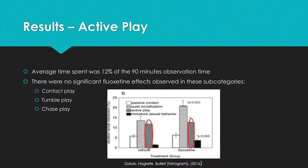The average time spent in active play was 12% of the 90 minutes observed, and there were no significant changes from vehicle to fluoxetine-treated monkeys. As shown in the chart, there was not much difference — maybe a slight difference, but not enough to be statistically significant.